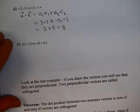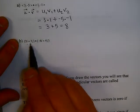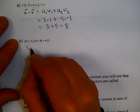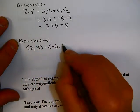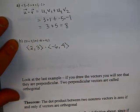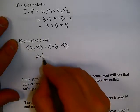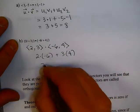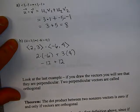Your author likes to use component form. Here we have 2i plus 3j dotted with negative 6i plus 4j. Writing that in coordinate form and applying the dot product: u1 times v1 is 2 times negative 6, and u2 times v2 is 3 times 4. That gives negative 12 plus 12, and that dot product is 0.